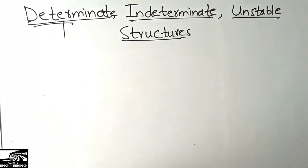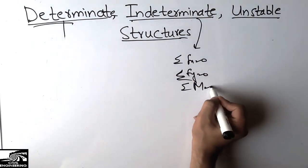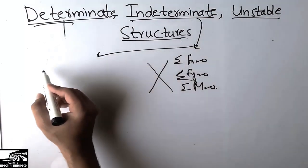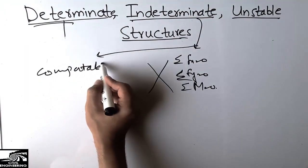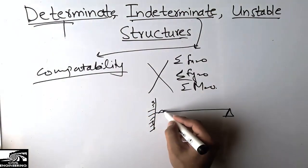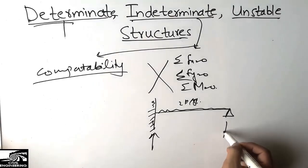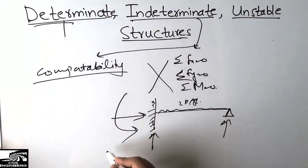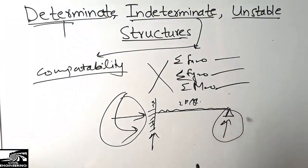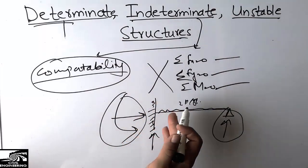Indeterminate structures are those which cannot be easily solved by summation of Fx = 0, summation of Fy = 0, and summation of moments = 0. These require another method, such as compatibility conditions. For example, taking a beam with a hinge at one end and a fixed support at the other — when a load of 2 kips per foot is applied, we cannot find the reactions using just the three equilibrium equations, so we use compatibility conditions. This is called an indeterminate structure.